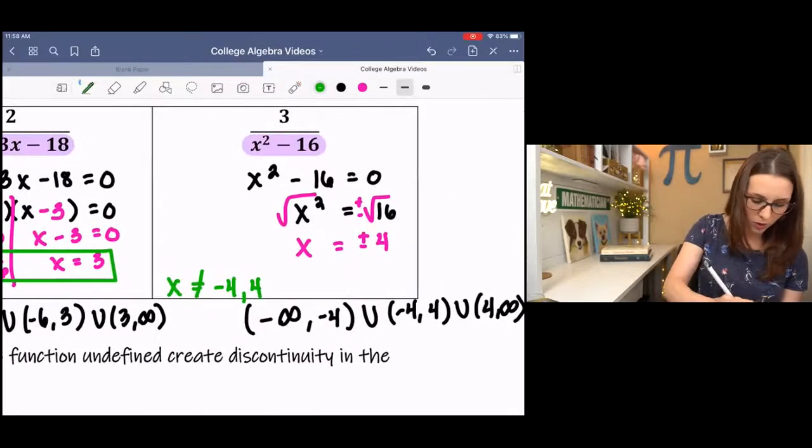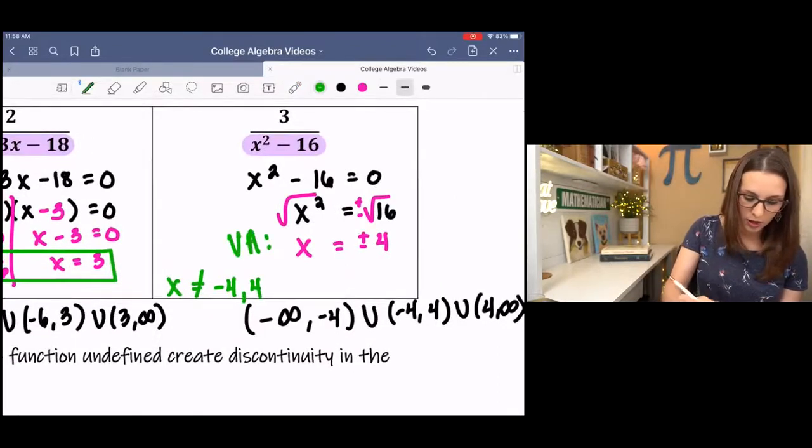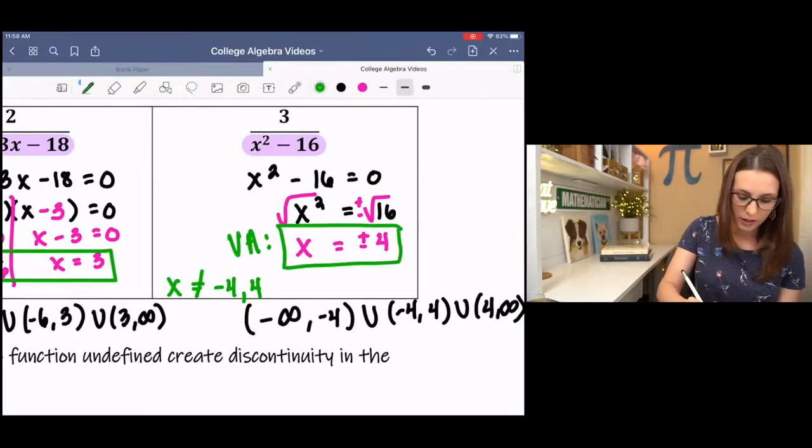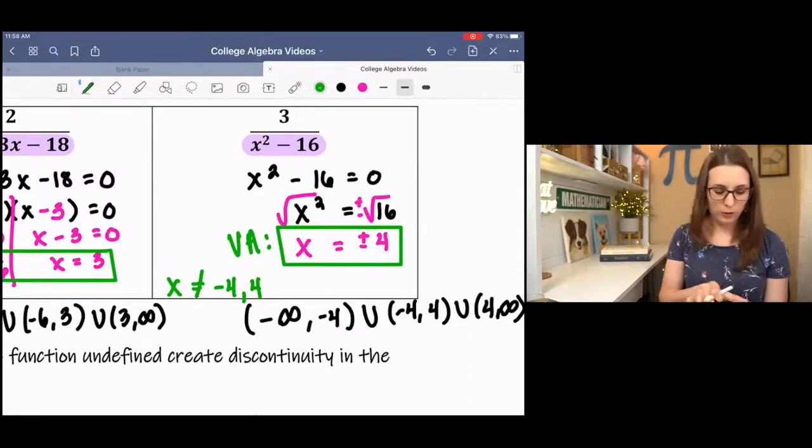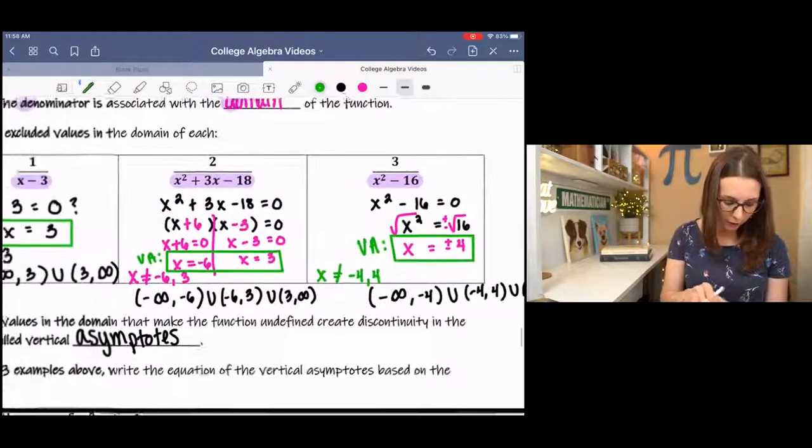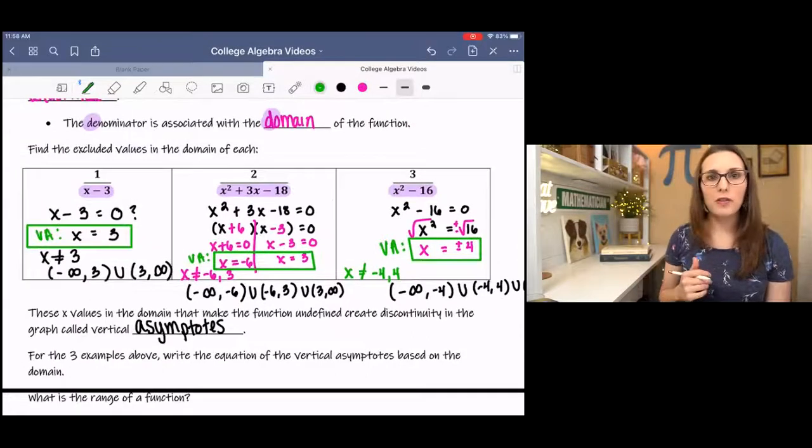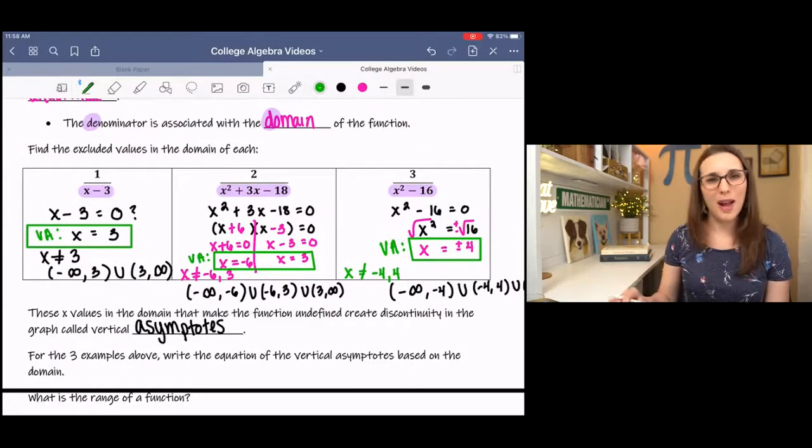And then the last one, the vertical asymptotes would be here, x equals negative 4 and x equals positive 4. That's all I have for vertical asymptotes. I hope you enjoyed it. If you have any questions, please let me know and I'd be happy to help.